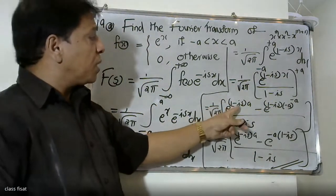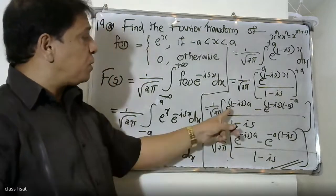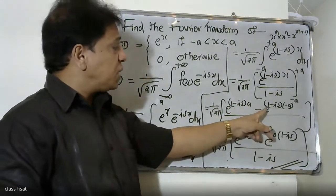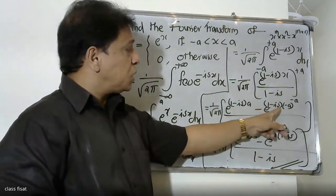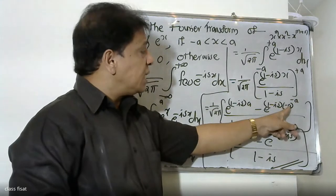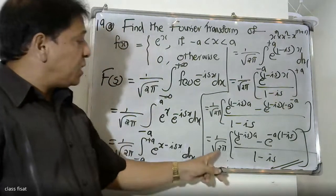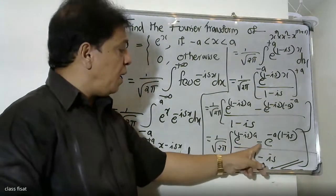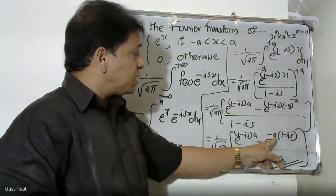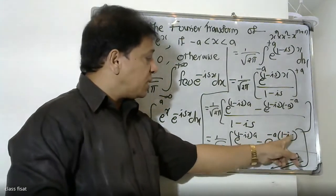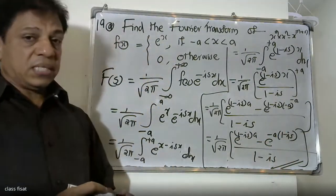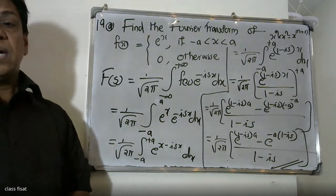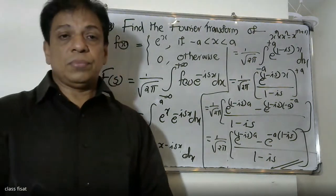Integrating e^{(1-is)x} gives e^{(1-is)x} divided by (1-is). Applying the upper limit a and lower limit minus a: we get e^{(1-is)a} minus e^{-(1-is)a}, all divided by (1-is). So the final Fourier transform result is (1/√2π) times [e^{(1-is)a} minus e^{-(1-is)a}] divided by (1-is).